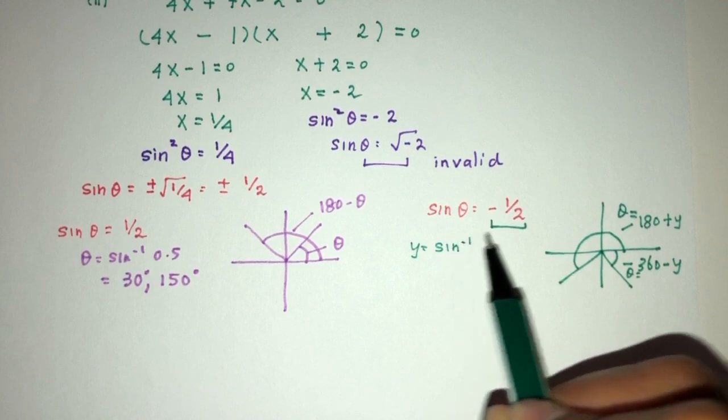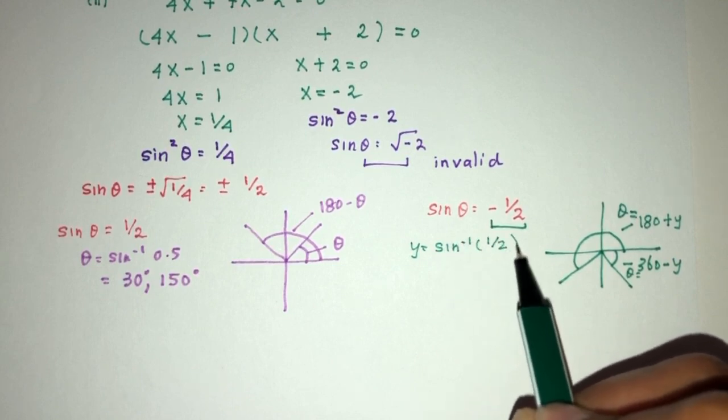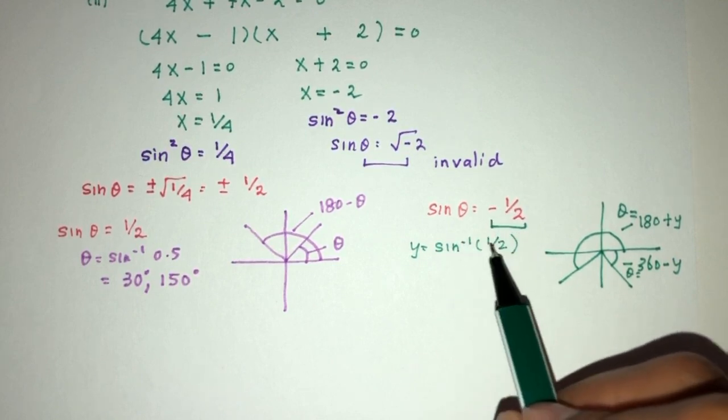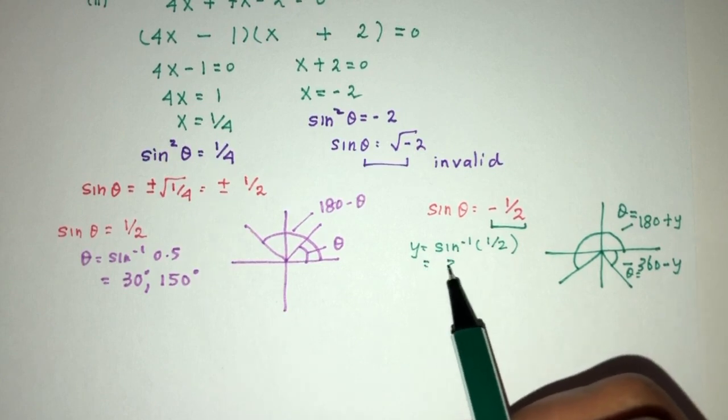y will be sin⁻¹ when it is a positive value. So, again, it will not be negative. y will be when it is positive. That will be 30 degrees.